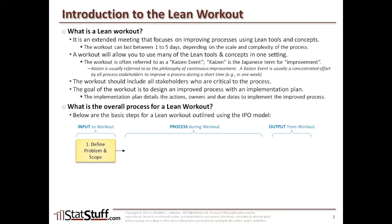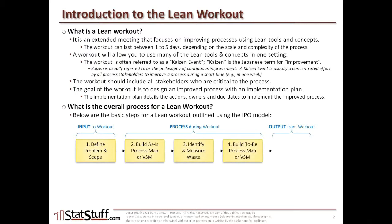Starting first with the input: you want to define the problem and the scope of the workout before it begins. The process of the workout itself begins with taking that defined problem and scope, then building the as-is process map or value stream map showing the current state. Next, you identify and measure any waste — all the non-value-added steps within the process. Then you build the to-be process map or to-be value stream map showing where you want to be in the future after removing identified waste. The output from the workout is an implementation plan laying out the steps and actions to implement those improvements.